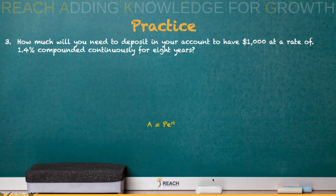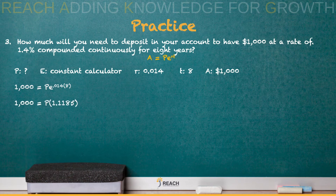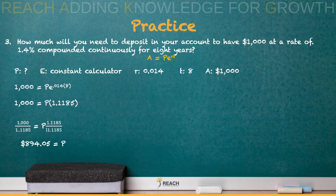Number 3: we have to use the compounded continuously formula because it says compounded continuously. Label the variables and we're solving for P, our principal amount. Plug in E to the 0.0148 power — remember that's an exponent — and get 1.1185. Since P is being multiplied, divide both sides by that number, and P is about $894.05.